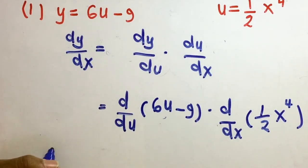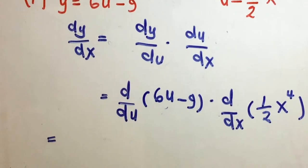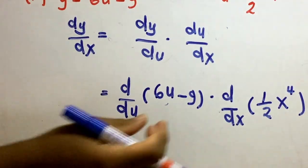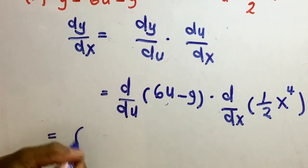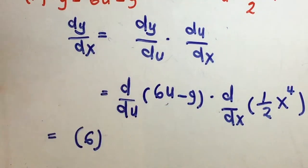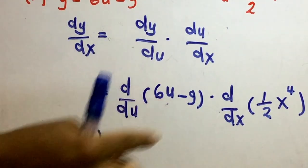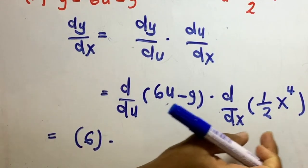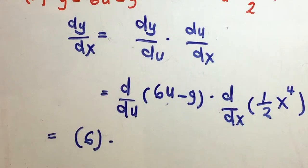The derivative of 6u minus 9 with respect to u: 9 is a constant, so its derivative is zero. The derivative of 6u is 6. Now for the derivative of one-half x to the power of 4.